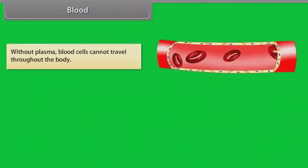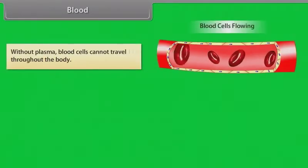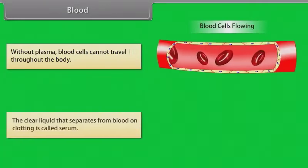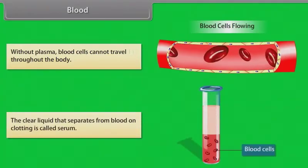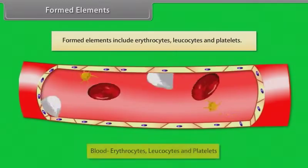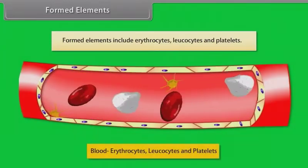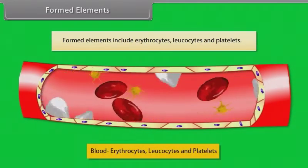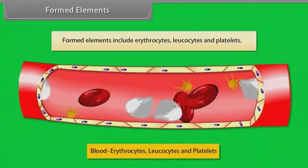Without plasma, blood cells cannot travel throughout the body. The clear liquid that separates from blood on clotting is called serum. Formed elements include erythrocytes, leukocytes, and platelets.